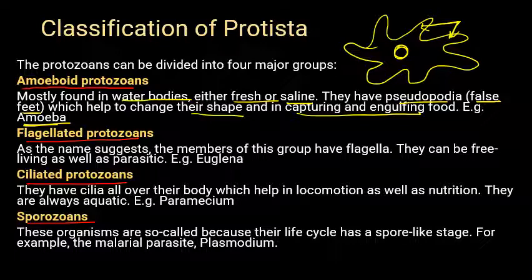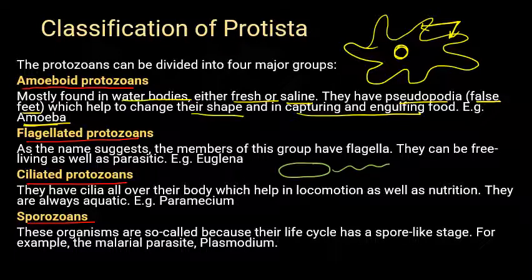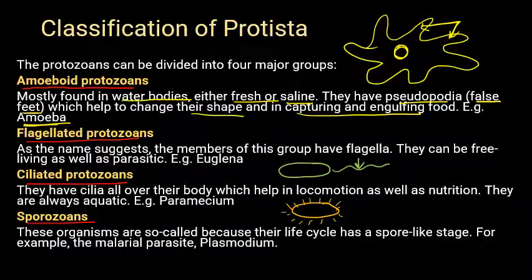Flagellated protozoans, as the name suggests, possess flagella. Ciliated protozoans have cilia all over their body, which helps in locomotion as well as in nutrition.